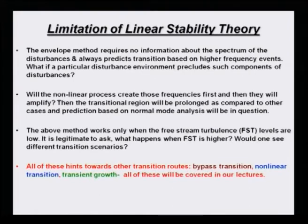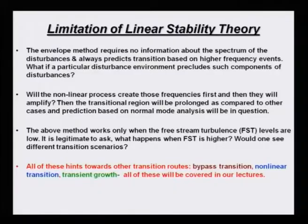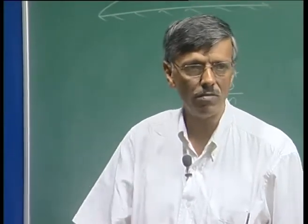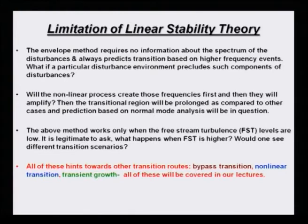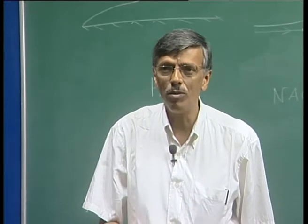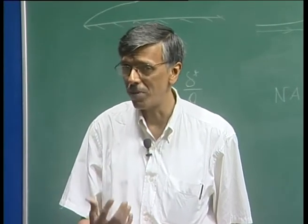The e to the power 9 theory may say that for larger value of H, which means the decelerated flow, there would be a significant difference, but that does not happen in practice. Please do understand that these linear theories do have their limitations. The envelope method, the e to the power N method, does not require any information about the frequency content or what we call the spectrum of the disturbance. We just say that whenever it reaches the value of N equal to 9, transition occurs, and it also predicts transition based on higher frequency events.